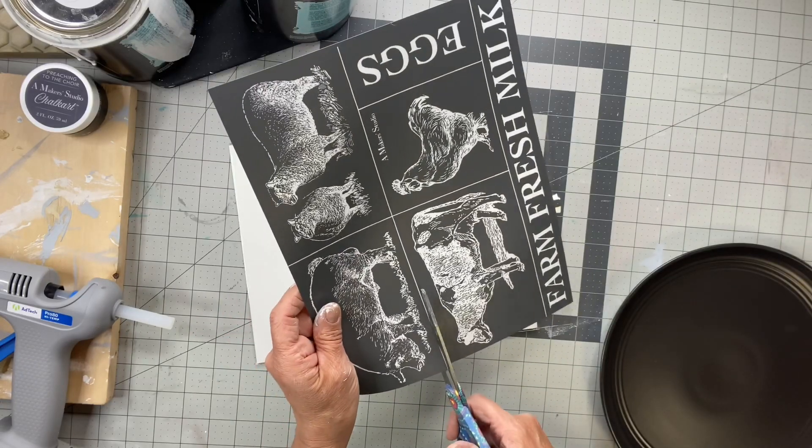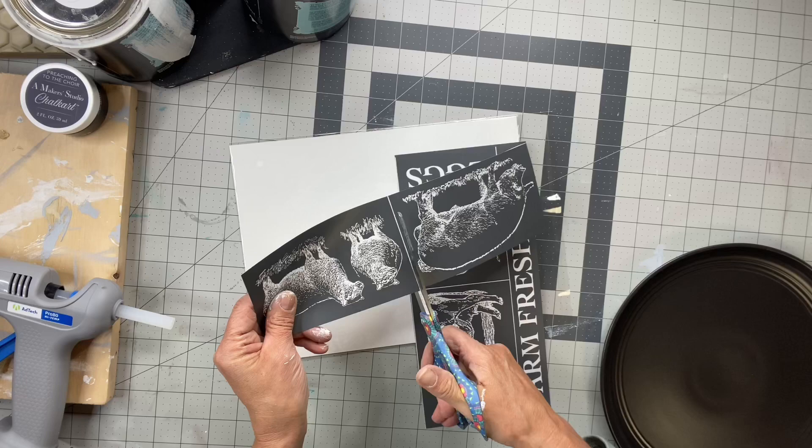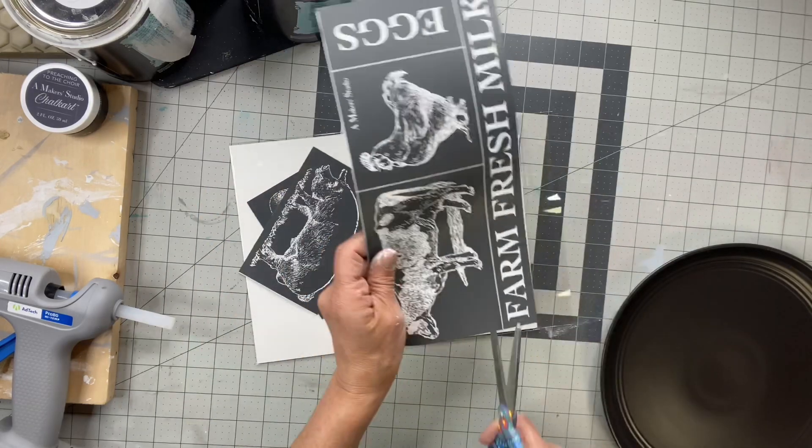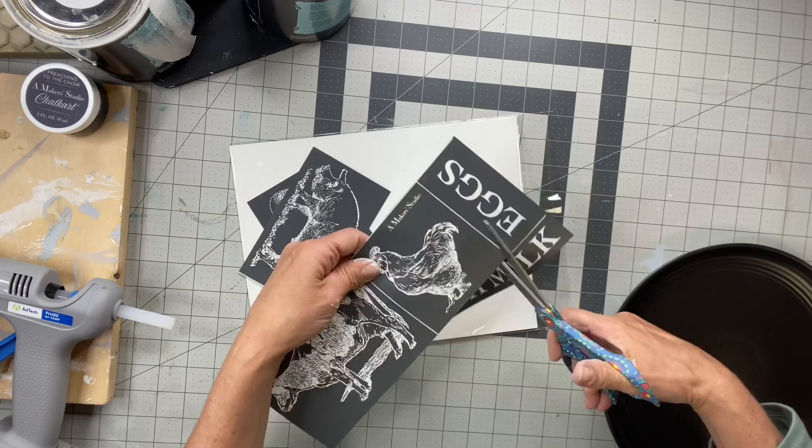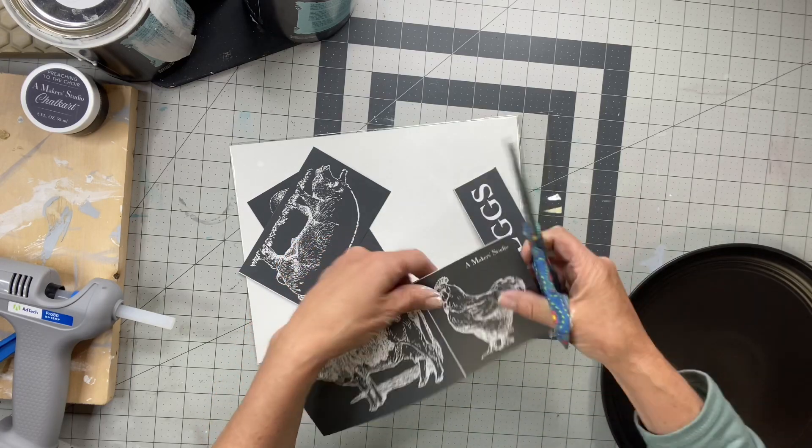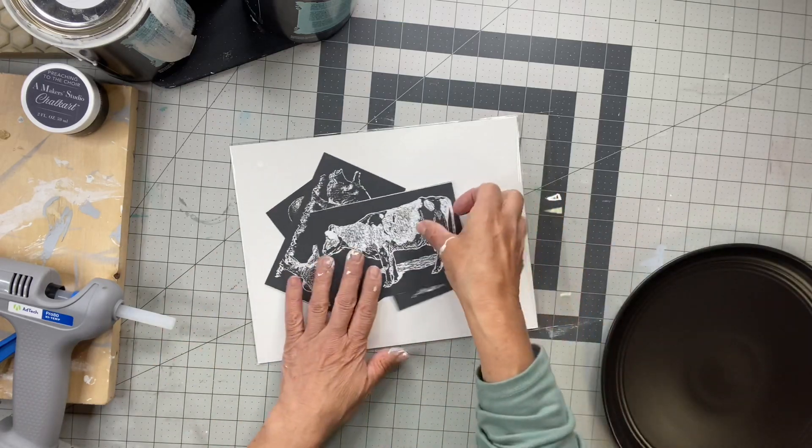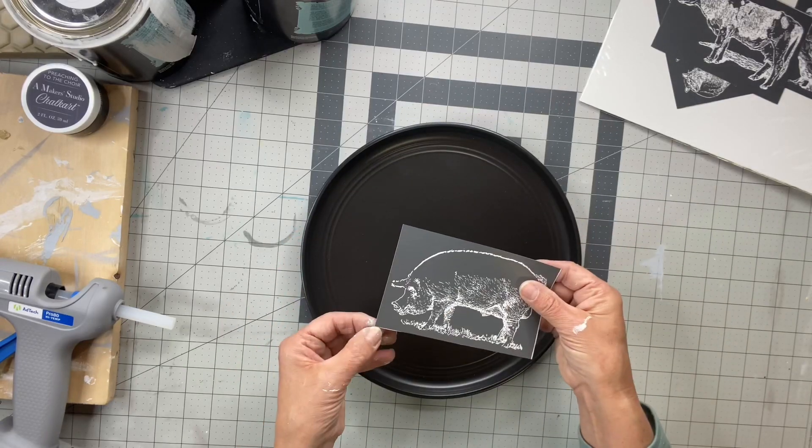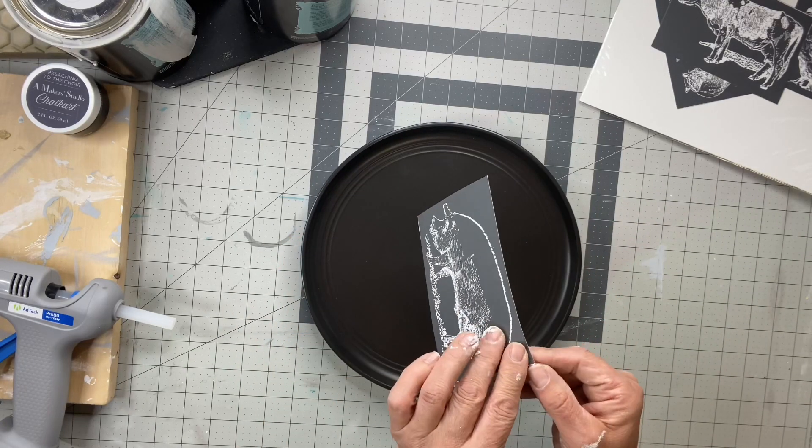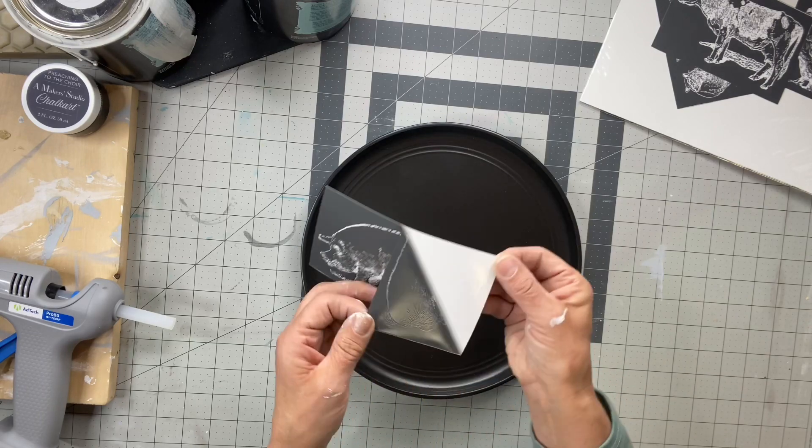It has a pig, a pair of lambs, a cow, a chicken, and it says eggs, milk, and farm fresh. So you want to start by cutting out whatever pieces you're going to use, and I'm going to go with the farm animals in the center of each plate.